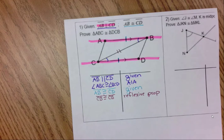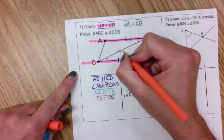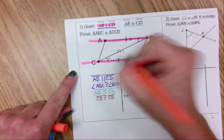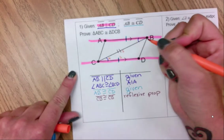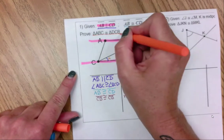So now, I have a side, I have an angle, and I have a side. I have enough information in the right order.